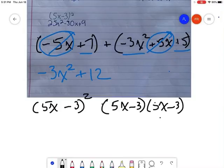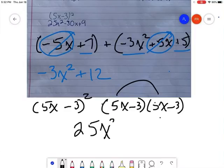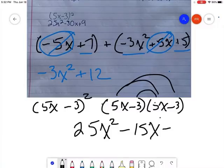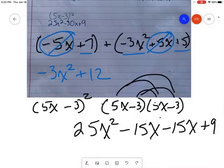So in doing this, I can multiply. 5 times 5 is 25x squared. 5x times negative 3 is minus 15x. Negative 3 times 5x is another minus 15x. And negative 3 times negative 3 is positive 9.